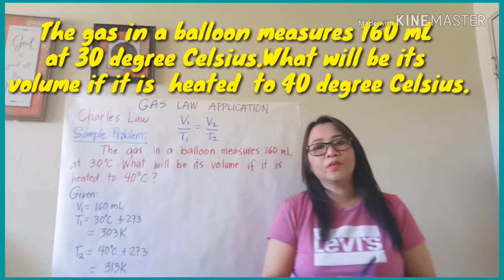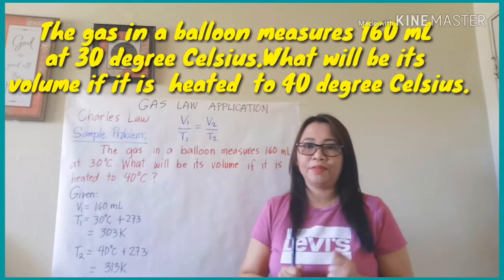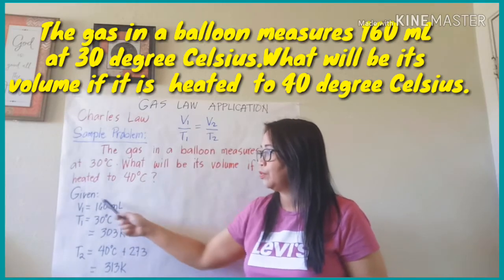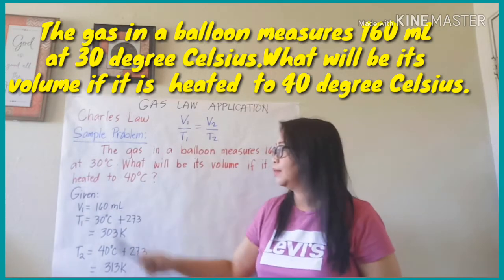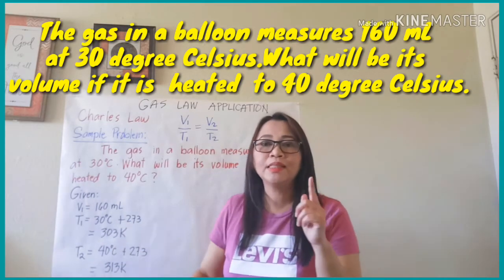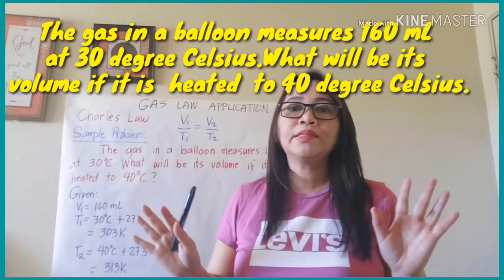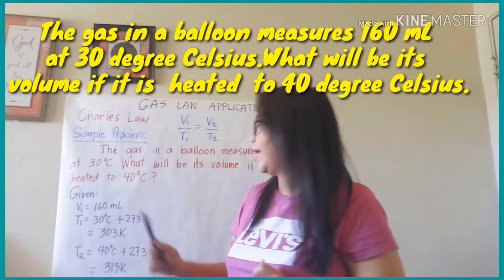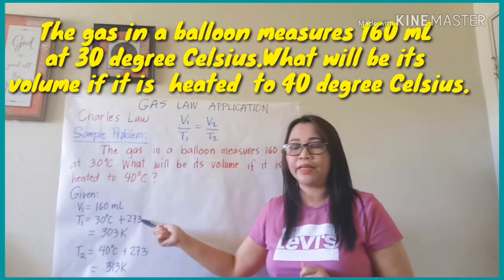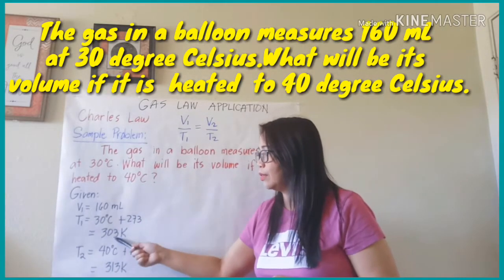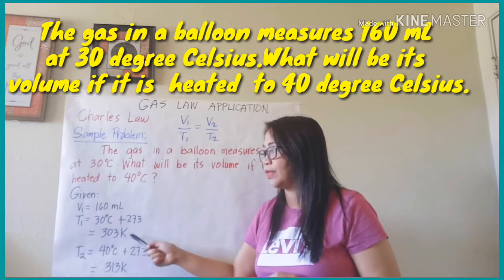So to solve this problem, let us identify the given. For the given, we have the following: initial volume, which is 160 ml; initial temperature is 30 degrees Celsius. In Charles Law, you have to convert the temperature to Kelvin by adding 273. So 30 plus 273 equals 303 Kelvin, so our initial temperature will be equal to 303 Kelvin.